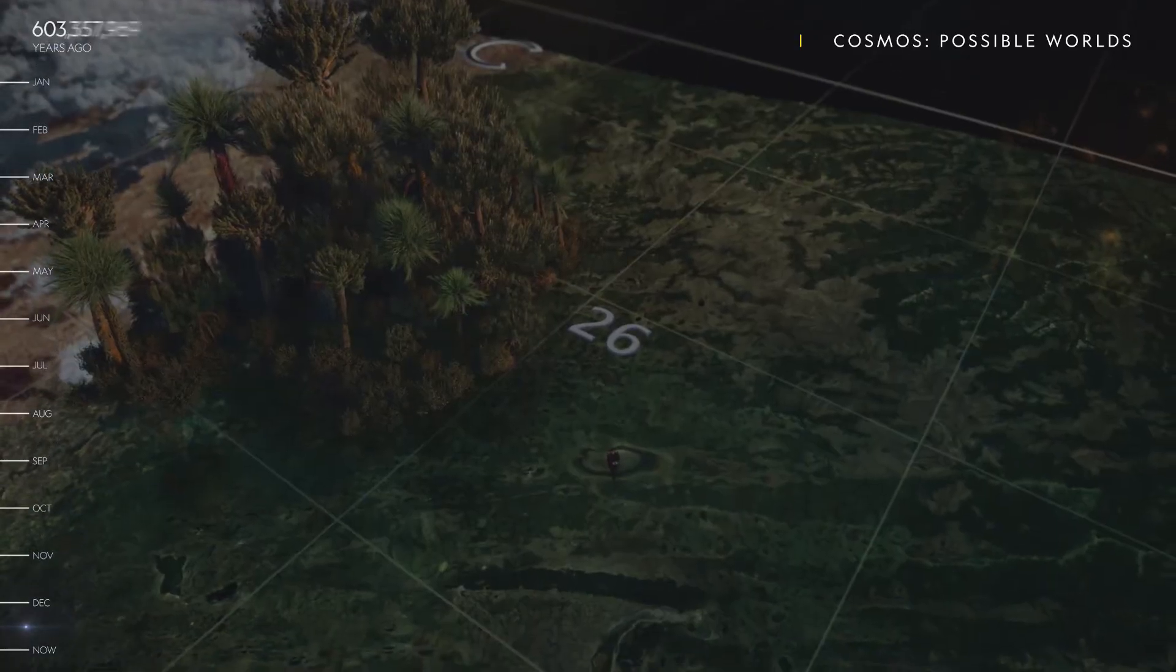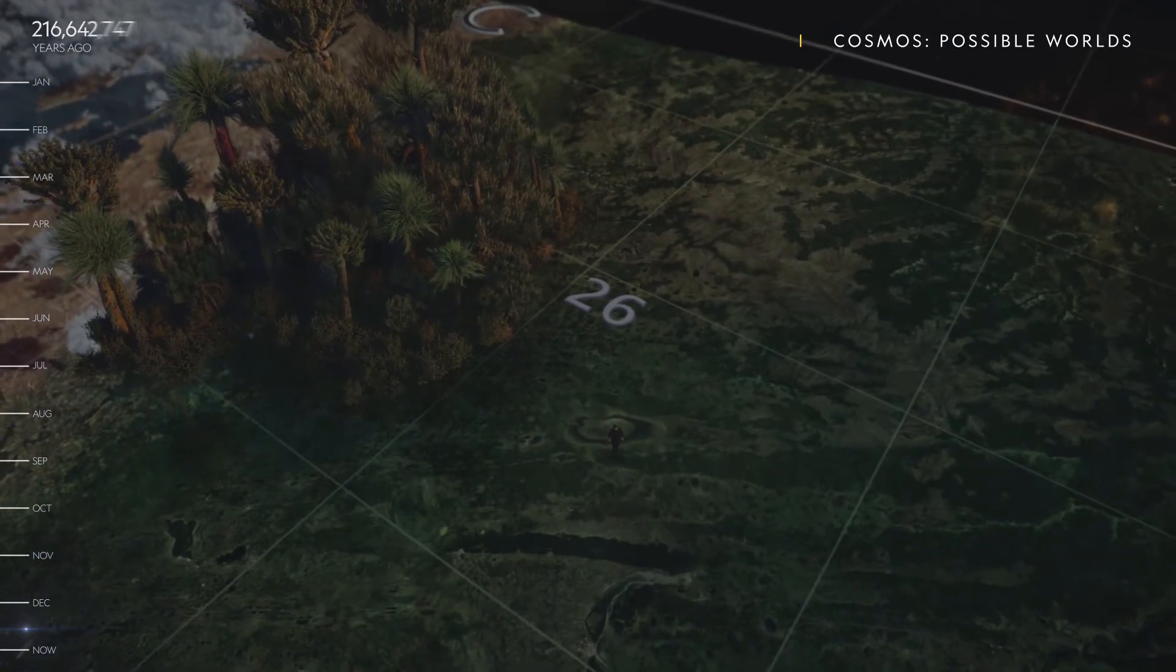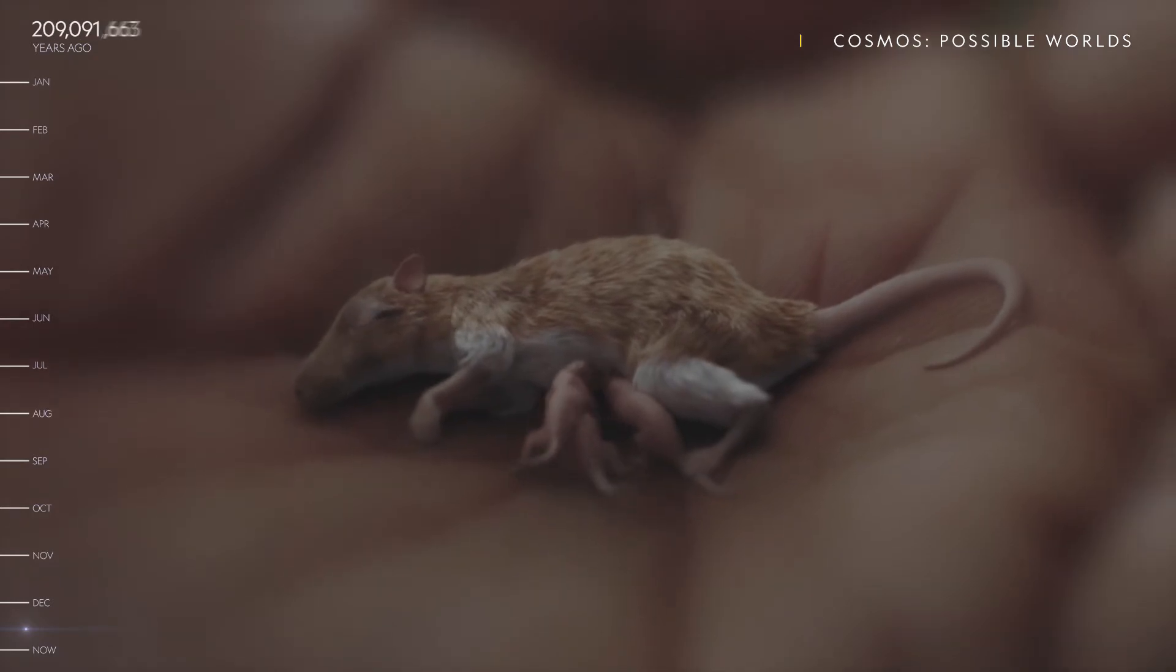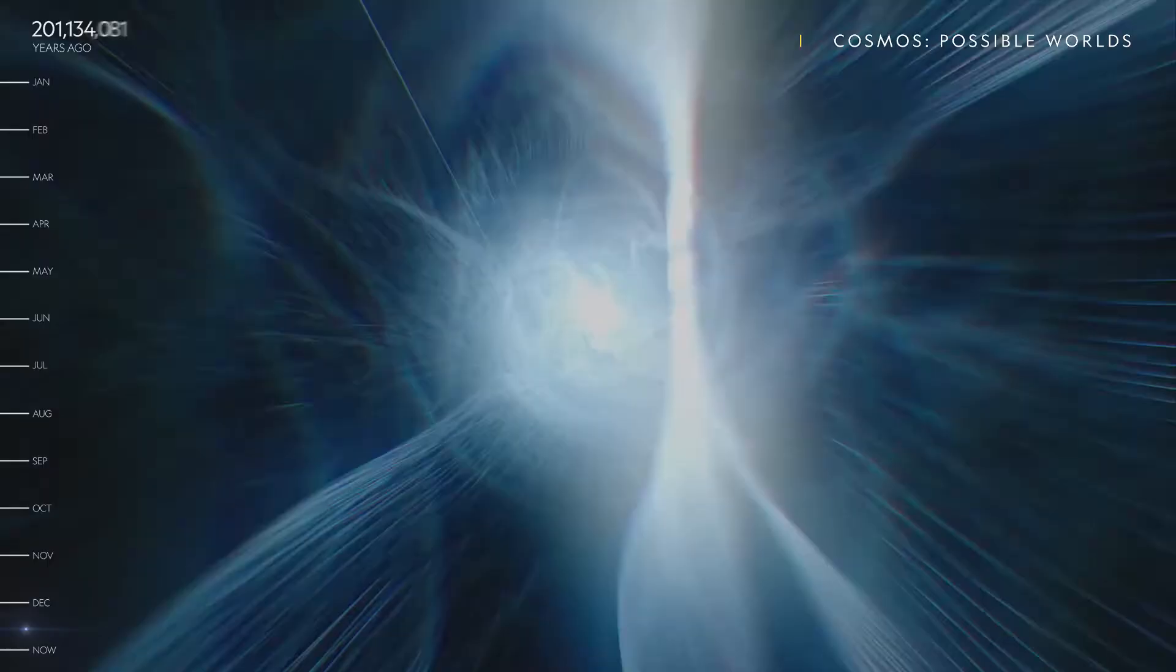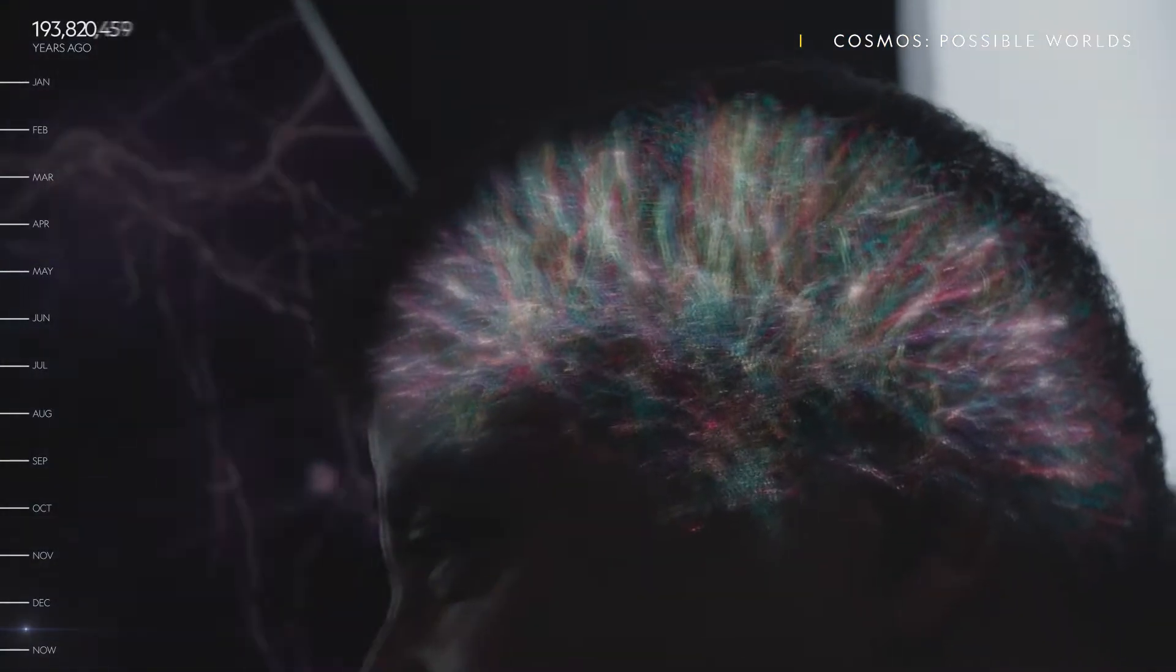Sometime on December 26th, about 200 million years ago, the first mammals evolved. They brought a new feature to life on Earth: the neocortex.